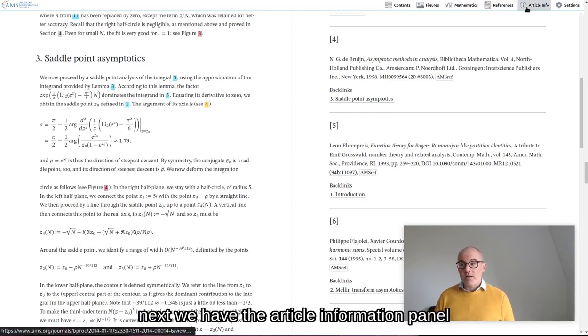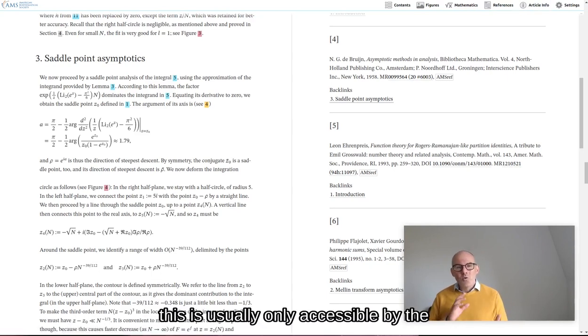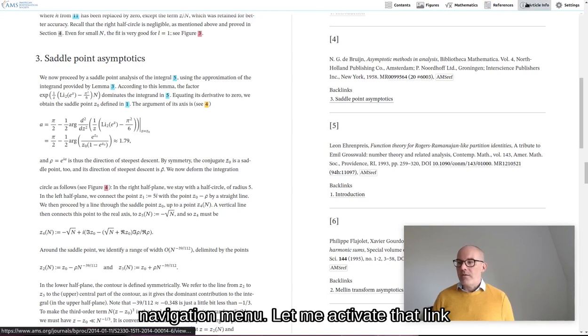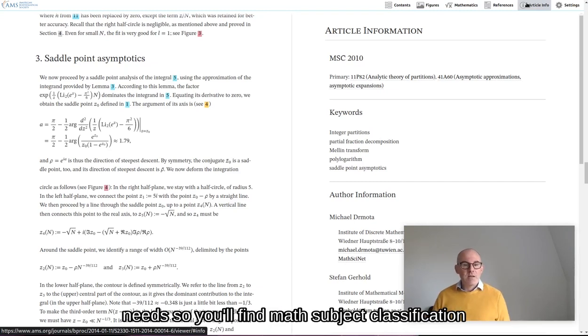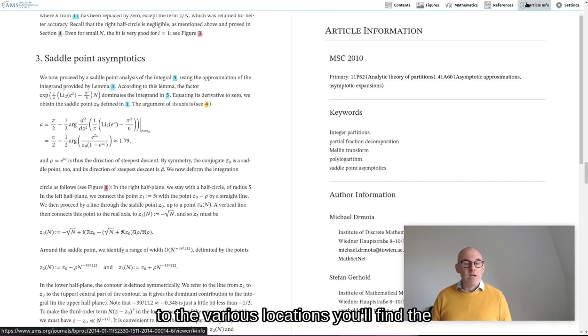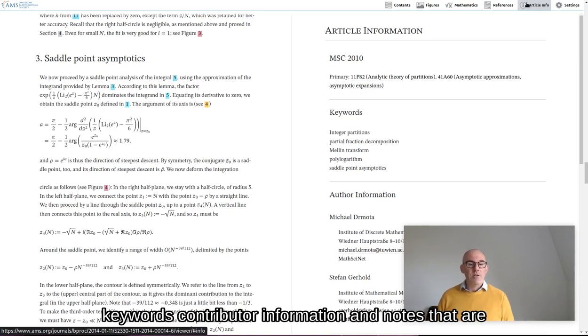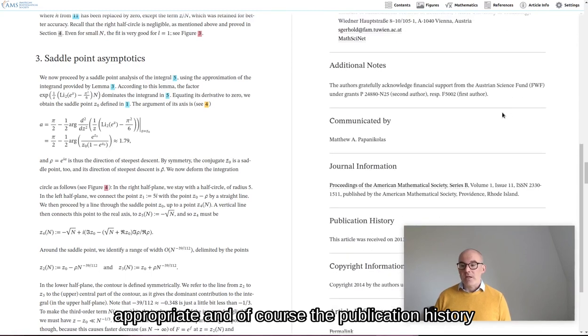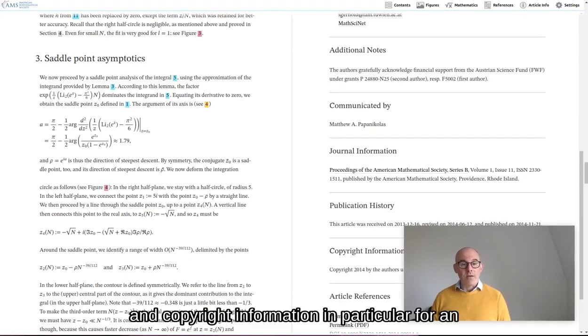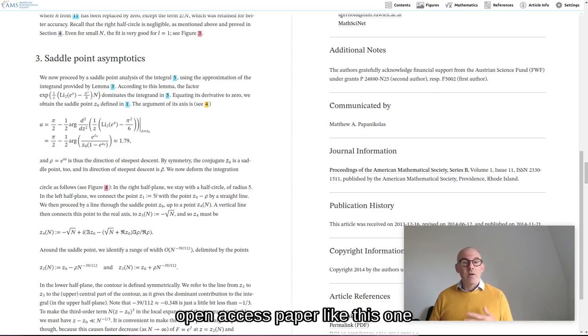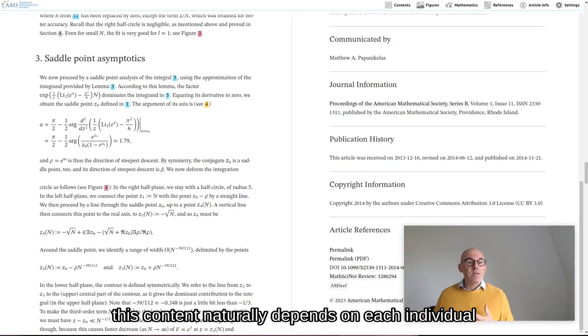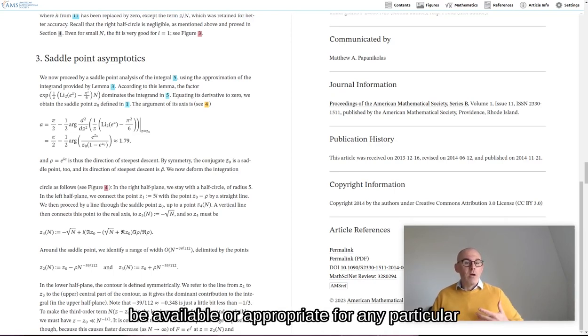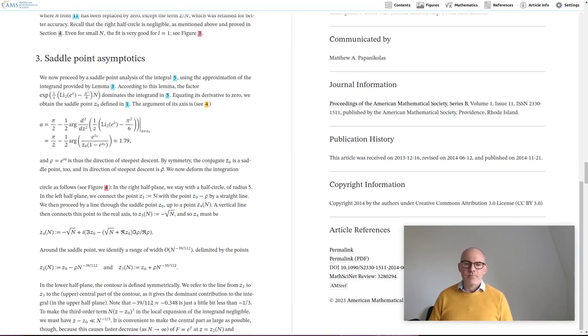Next, we have the article information panel. This is usually only accessible by the navigation menu. Let me activate that link. Here we cover all the article metadata needs. So you'll find math subject classification data, including, of course, the proper links to the various locations. You'll find the keywords contributor information and notes that are appropriate. And of course, the publication history and copyright information in particular for an open access paper like this one. Finally, you'll find metadata, DOIs, AMS ref data for the article itself. This content naturally depends on each individual article. Some of this information might not be available or appropriate for any particular journal or article.